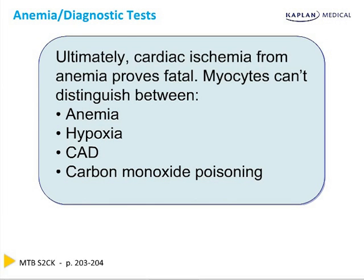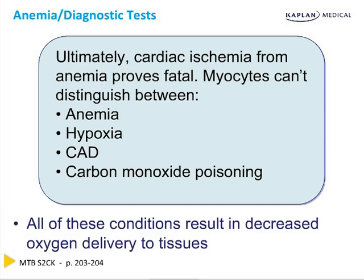Ultimately, cardiac ischemia from anemia proves fatal. The myocytes just can't distinguish between anemia, hypoxia, coronary artery disease, or carbon monoxide poisoning — all of these conditions result in decreased oxygen delivery to tissues. In anemia, you don't have red cells to carry the oxygen. If you're hypoxic, there is no oxygen to deliver. If you have coronary disease, there's stenosis blocking blood flow. In carbon monoxide poisoning, you have cells that are fully saturated with oxygen but simply will not release it to the tissues.